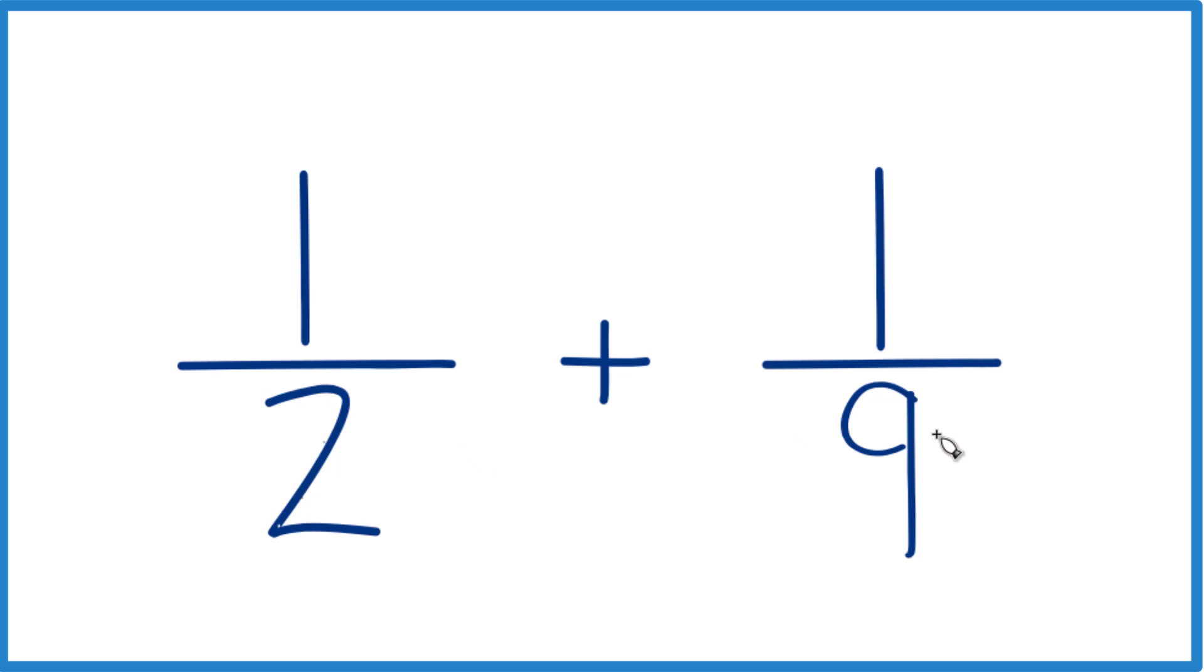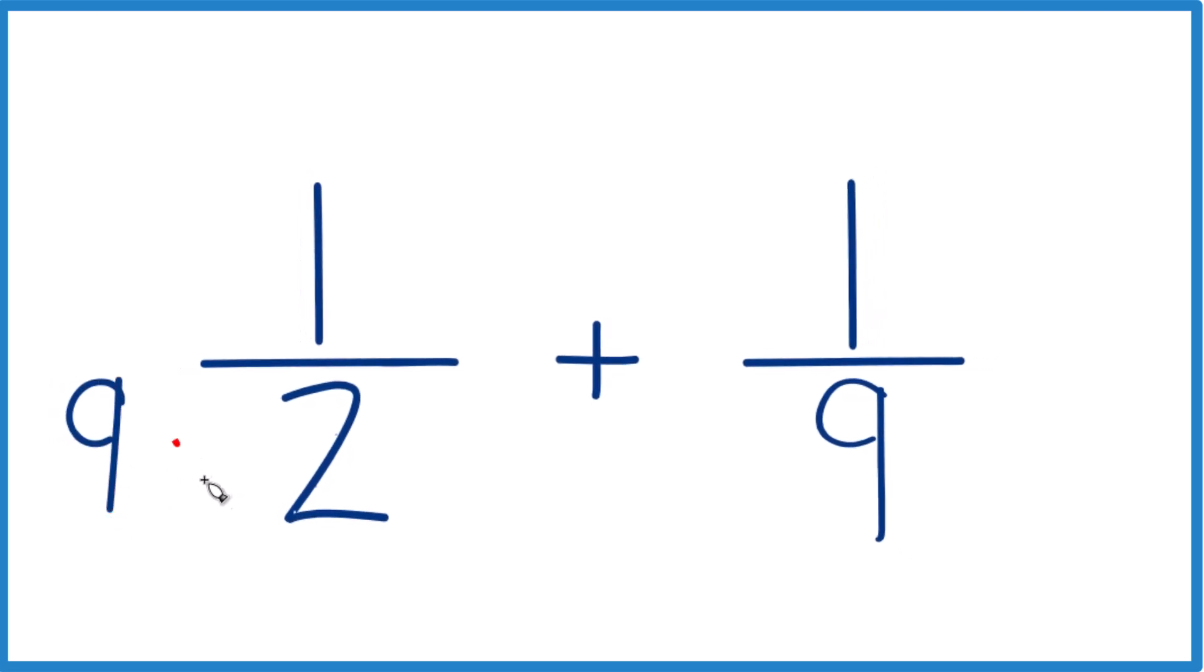So 2 and 9, it looks like we could multiply 2 by 9 and 9 by 2. Both of those would give us 18, that would be a common denominator. So let's do that, 2 times 9 here and then 9 times 2 over here. Both of those would give us 18.